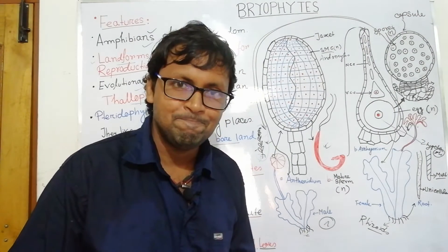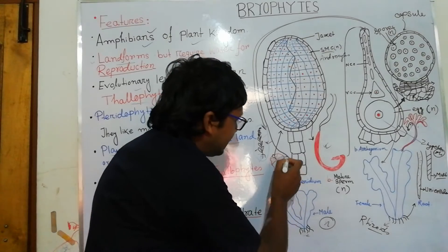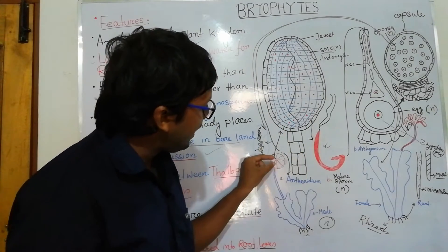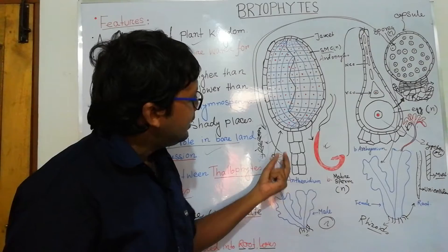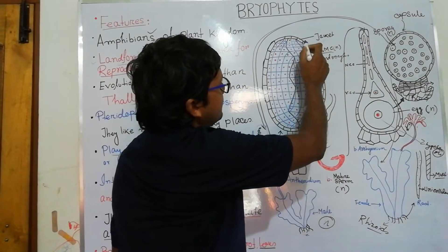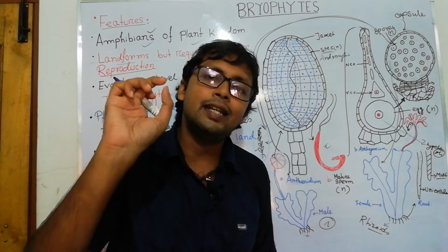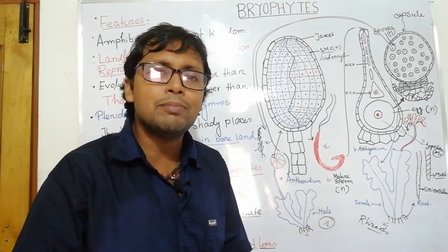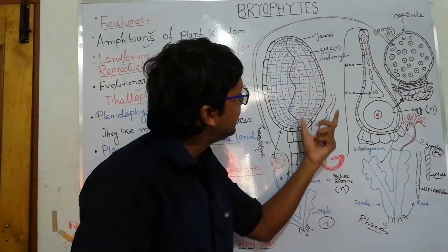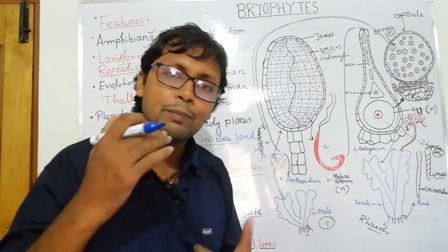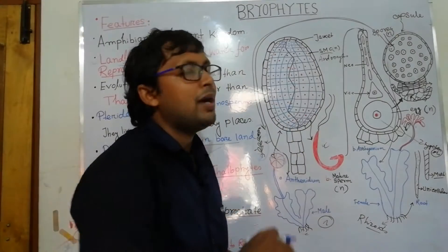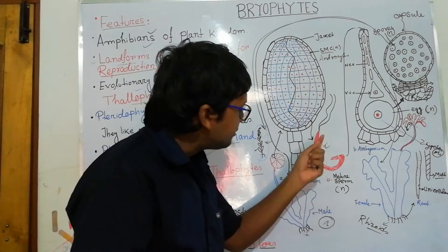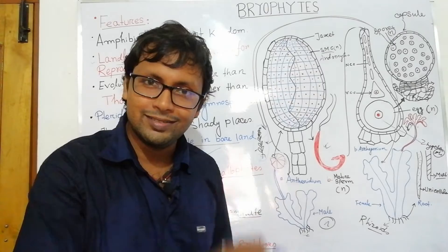The male gametes are called antherozoids, and the structure where they are produced is called the antheridium. The antheridium has a stalk, develops as a small minute structure, and has a sterile jacket — sterile cells that are not seen in algae but are present here as an improved trait. Inside are sperm mother cells, which are haploid and produce sperm with flagella for swimming.